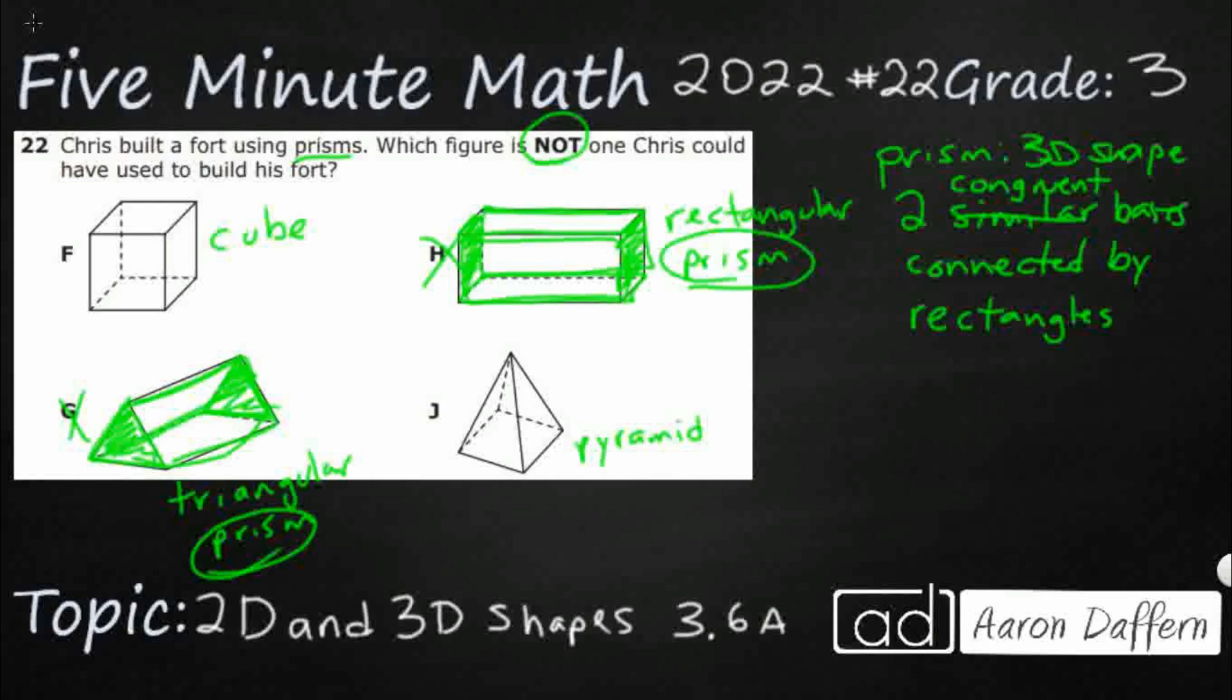So, let's look at this pyramid. I've got one base, but look, there's no matching base up here. So, it doesn't have two bases. It only has one. So, that I don't think is going to be our prism. Let's check this cube.